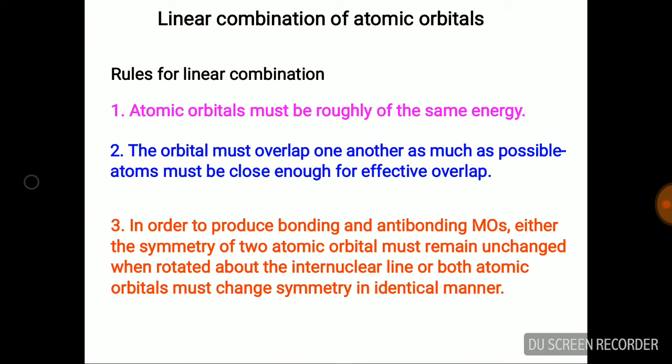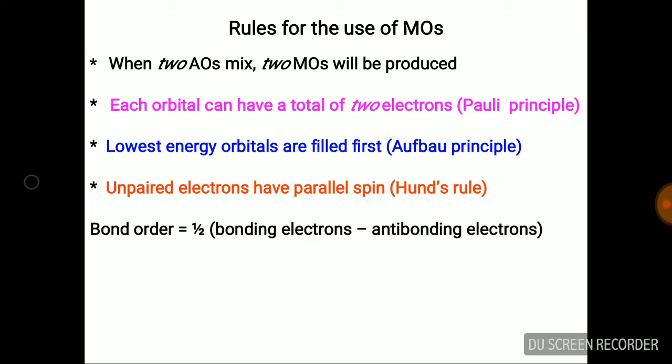There are two types: bonding and anti-bonding molecular orbitals. The number of molecular orbitals are the same in number to that of atomic orbitals. The filling of electrons takes place according to the Aufbau principle and the unpaired electrons follow Hund's rule.